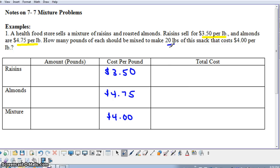Notice we're going to make a mixture that's 20 pounds, so we'll put 20 pounds here. If we were to buy 20 pounds of the mixture at $4 a pound, the total cost for that mixture would be $80. So some of this $80 is coming from the cost of the raisins, and some is coming from the cost of the almonds.